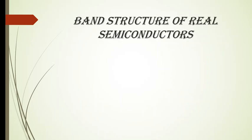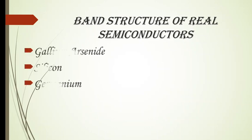Hello everyone. Today let us study about the band structure of real semiconductors. Band structure or band diagrams means how the valence band and conduction band are located in a semiconductor. Real semiconductors means we are considering some examples of semiconductors and studying their corresponding band diagrams. Here we are going to take three examples: gallium arsenide, silicon, and germanium, and study their corresponding band structures or band diagrams.